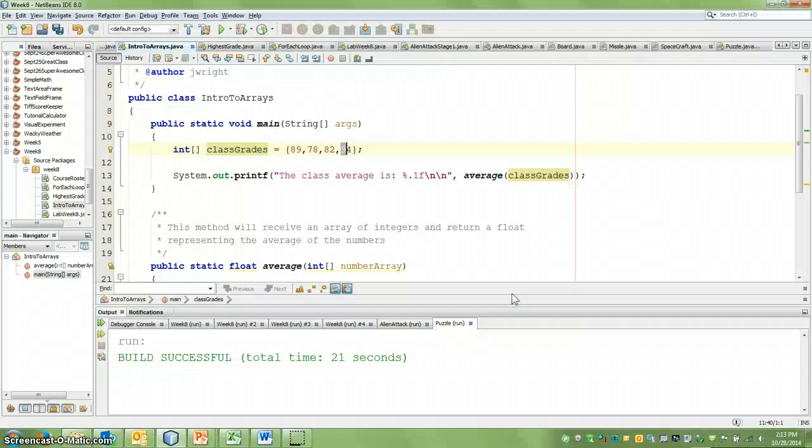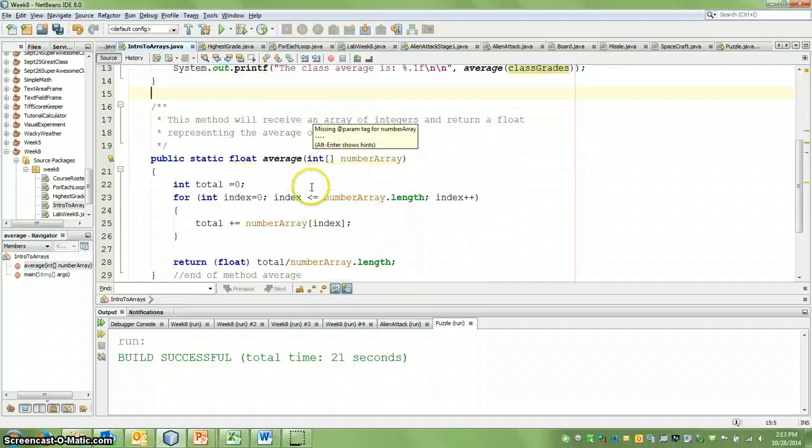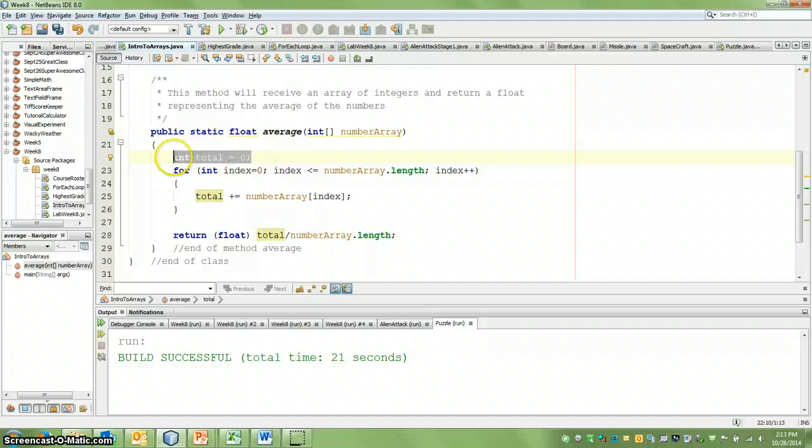So if I have these four numbers, look how easy it is to actually calculate things like an average. I can say system.out.print, the class average is, and I can call a method. Instead of passing in four variables, or ten variables, or a hundred variables, I'm going to just pass in one. Again, it's my container that holds the grades. So if we go into our method here, the average, I start off, I say total is equal to zero. And I'm going to add up all these numbers and divide by four.